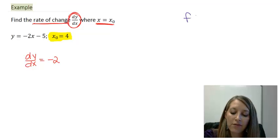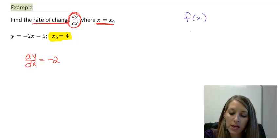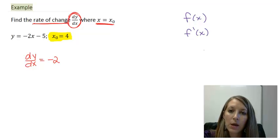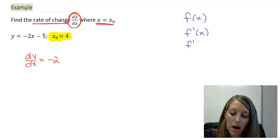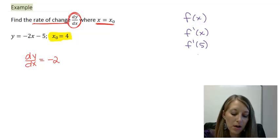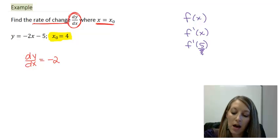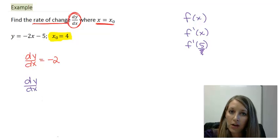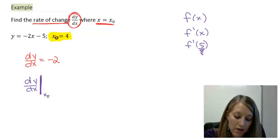Whenever our problem was f of x, we used the derivative notation of f prime of x. And whenever we plugged in a number like 5, we did f prime of 5. That notation was pretty consistent and no big deals there. Here, if we need to plug in a number, our notation is a little bit unique. It uses something that you've probably never seen before. So instead of doing this of 5, what we need to do is dy dx evaluated at, and that's what this bar here means, evaluated at. Then we use our x value, or in this case specifically our x naught value. Evaluated when our x naught is equivalent to 4.